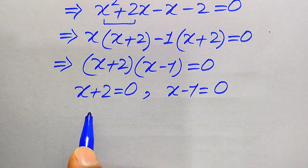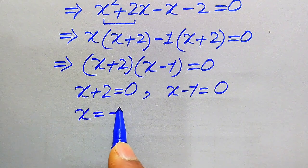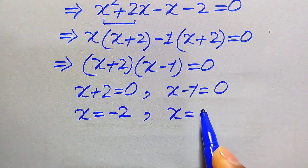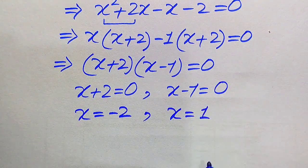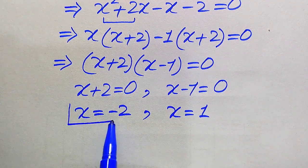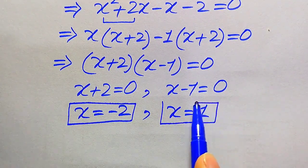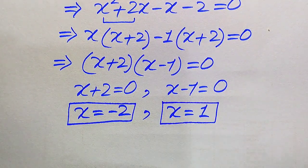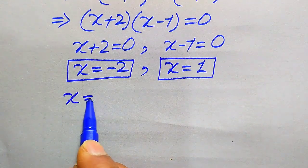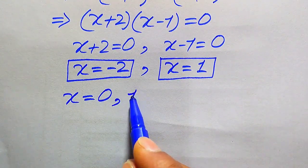From x + 2 = 0 we get x = −2, and from x − 1 = 0 we get x = +1. These are the second and third roots of the given equation. So finally we have three roots: 0, 1, and −2.